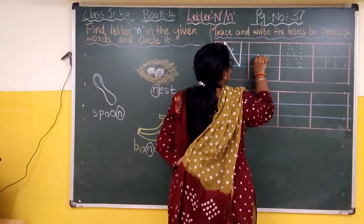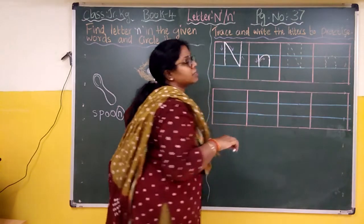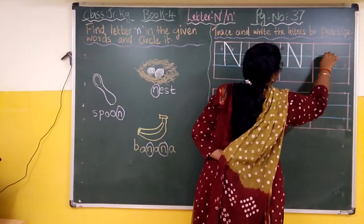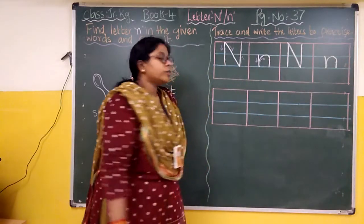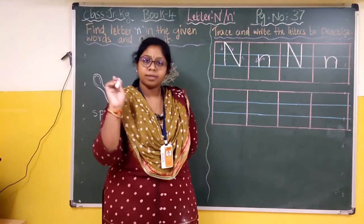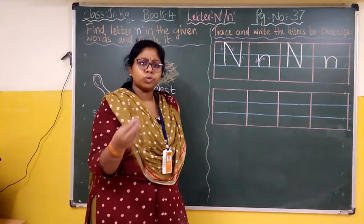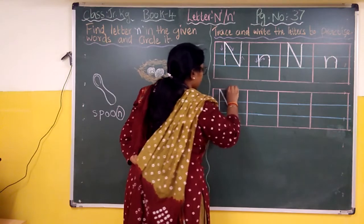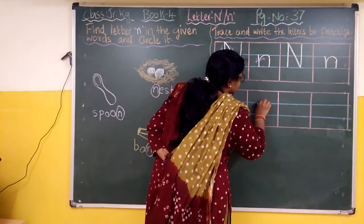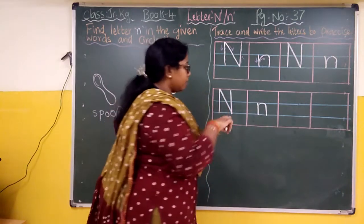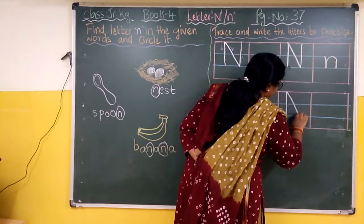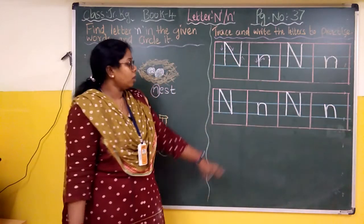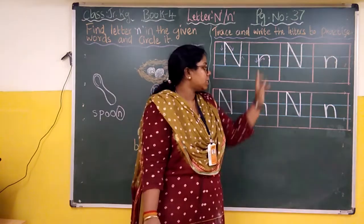For small letter n: we make a standing line, then from there make a curve and come down to touch the third line. Now we will practice — capital letter N, then small letter N in the next box, then again capital letter N, then small letter N. Same way, we will finish this tracing and writing part neatly.